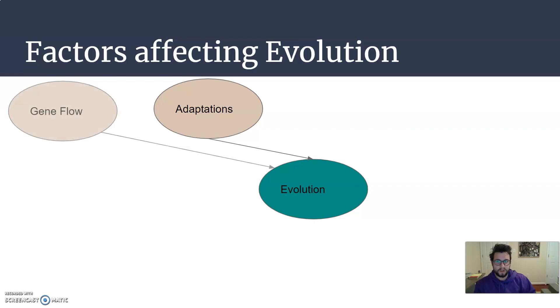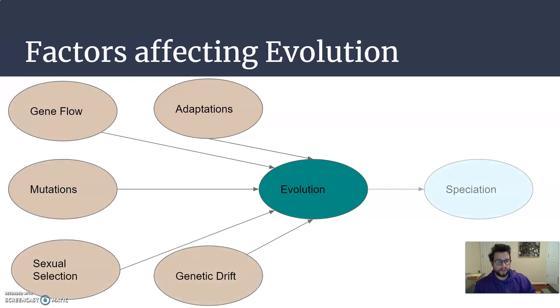So again, we had adaptations, gene flow, mutations, sexual selection, and genetic drift. These can change the organisms, change the species. And if there's enough changes together, it can lead to entire new species.